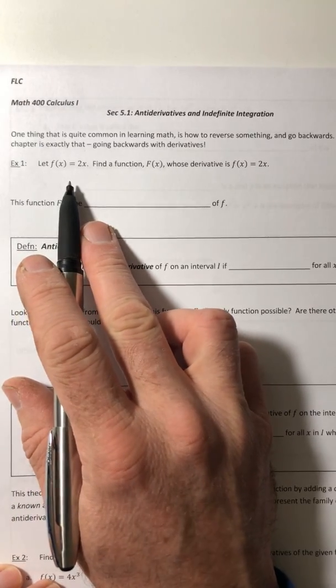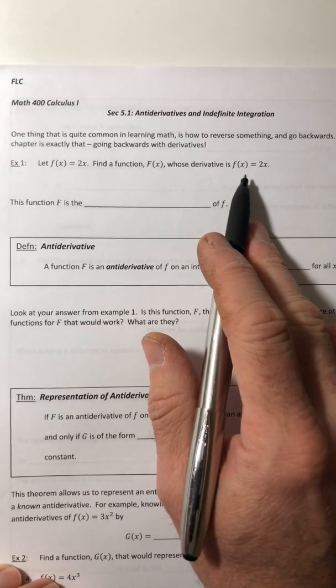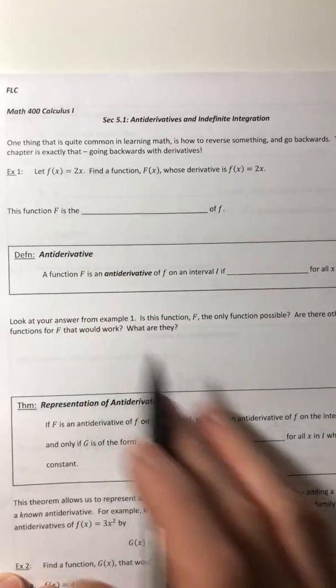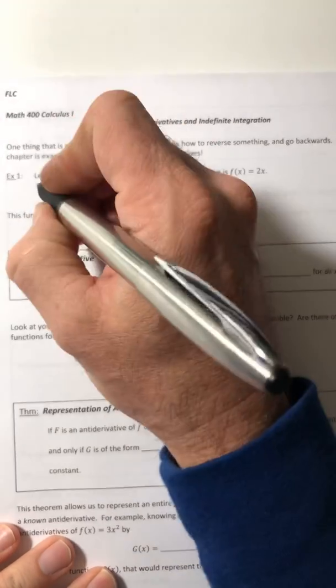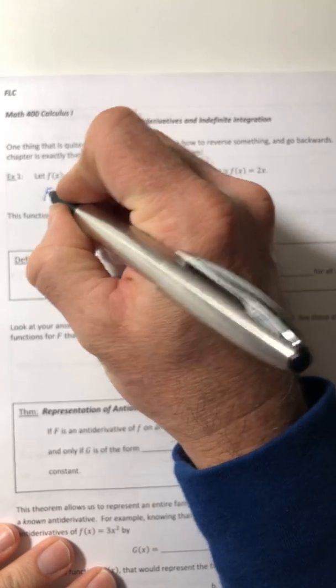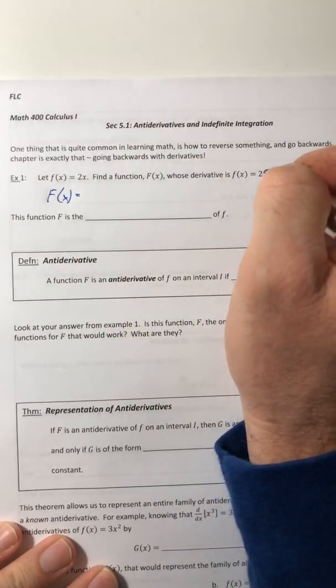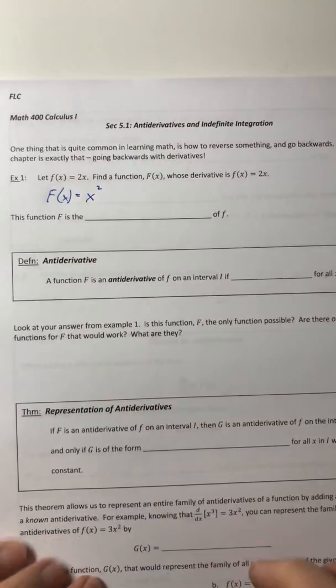Let's take a look at this. So let f of x equal 2x. We're going to find a function whose derivative is 2x. So we've been given the derivative. So what was the original function? And they specifically wanted it to be capital F of x. So whose derivative is 2x? x squared.